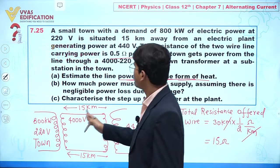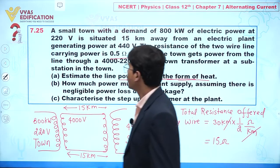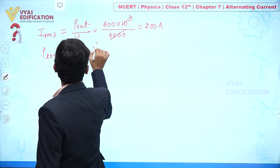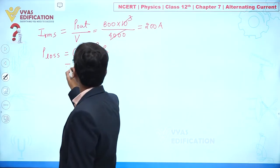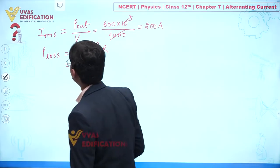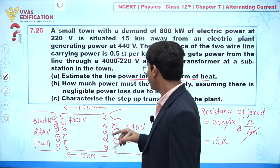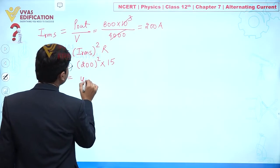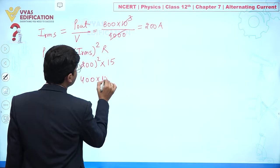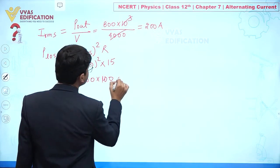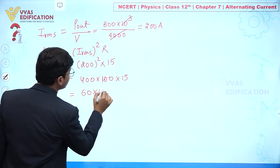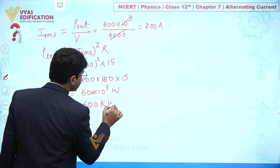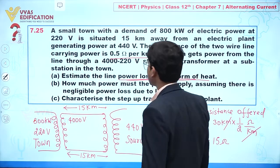Now we can calculate the total power loss as current flows from the plant to the town. Power loss = I_rms² × R = 200² × 15 = 40000 × 15 = 600 × 10³ watt. So the total power loss in the form of heat is 600 kilowatt. This is the answer to part A.